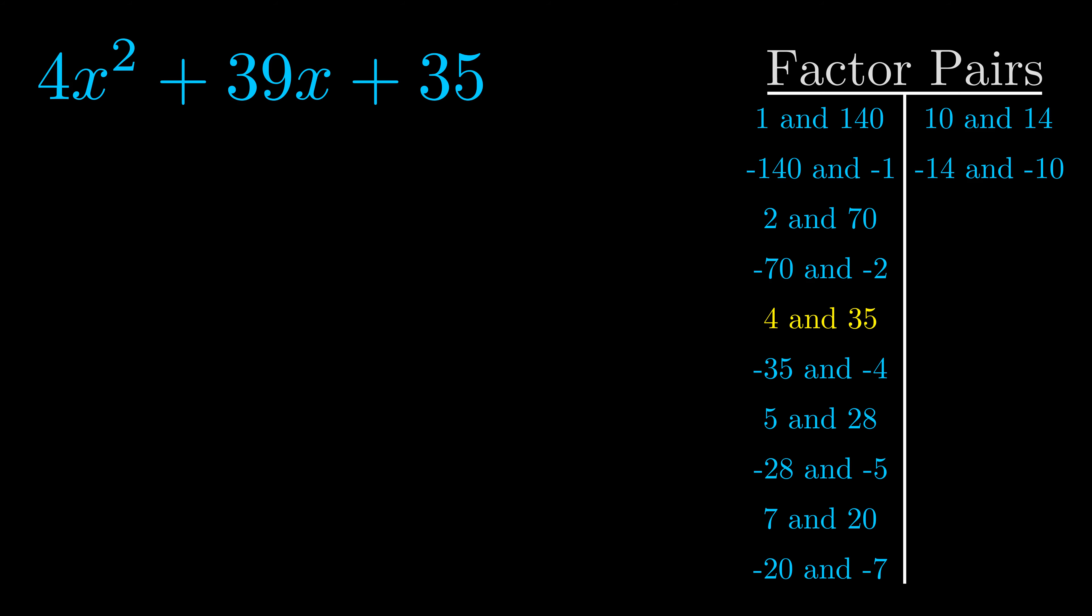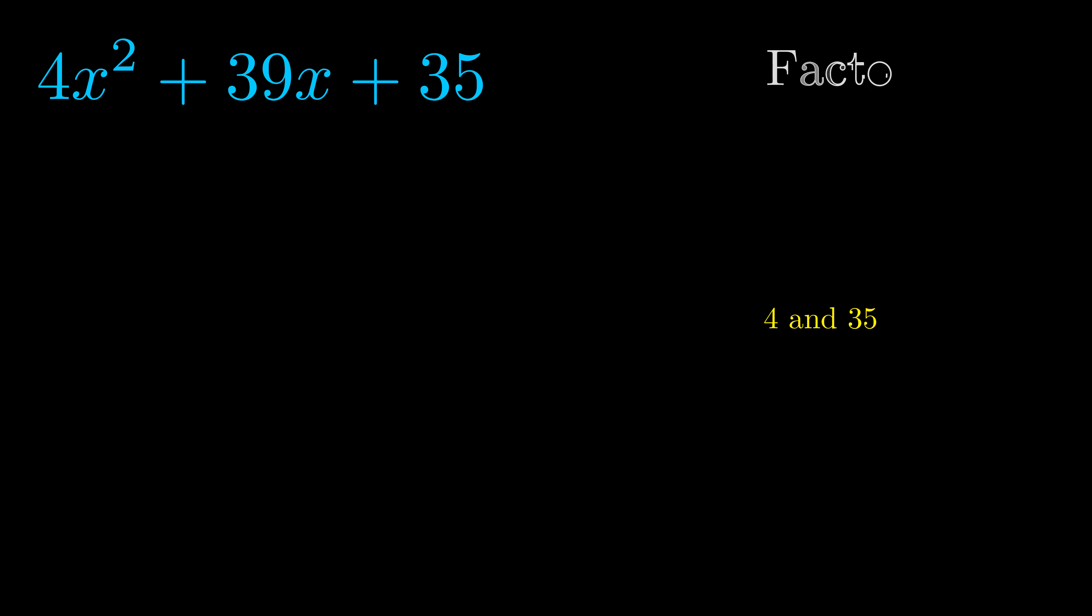And really this is the only factor pair that we need. Now once we have this factor pair, what we want to do is we want to use it to split up the b value.